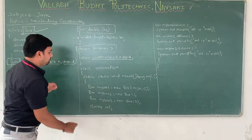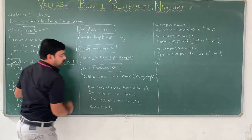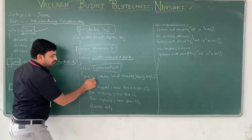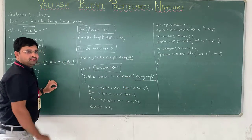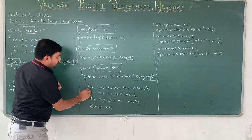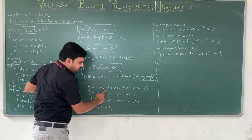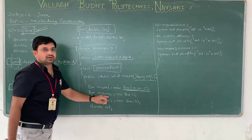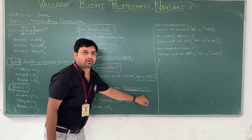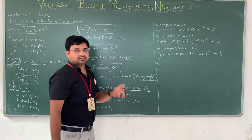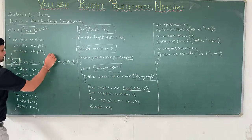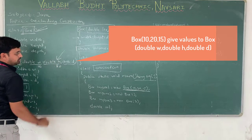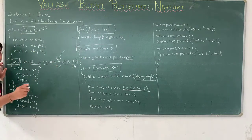Now in the main class called OverloadingConstructor, we take the main method and create multiple objects of the Box class. The first is: Box myBox1 = new Box(10, 20, 15). This calls the constructor that takes three parameters. The program goes to that constructor and assigns W to 10, H to 20, and D to 15, so myBox1 has width=10, height=20, and depth=15.